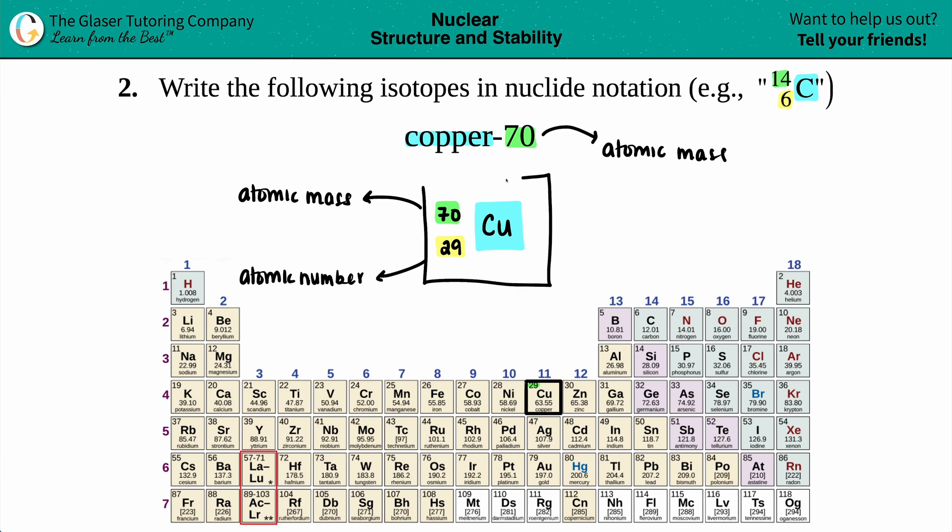And I'm done. That's the answer. That looks good to me. So we got a 70 on the top, a 29 on the bottom, and Cu for copper. And that's it.